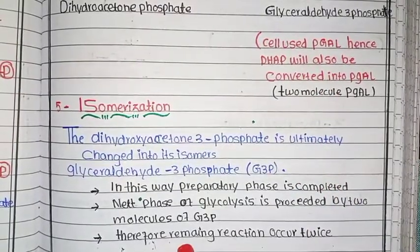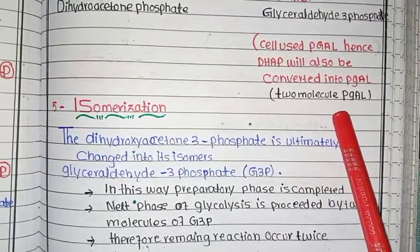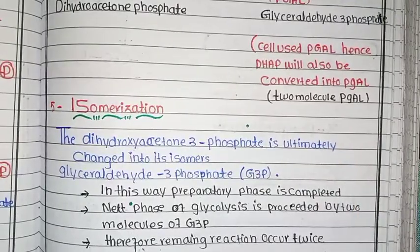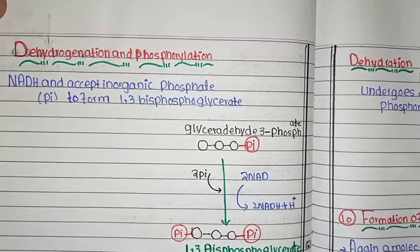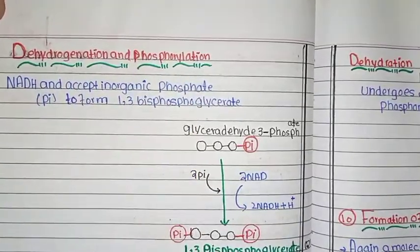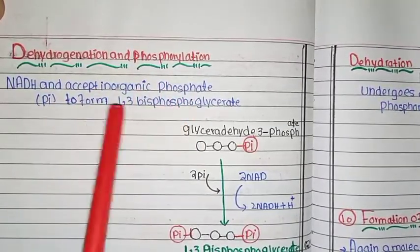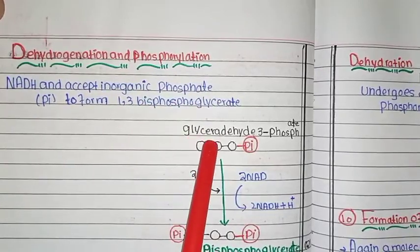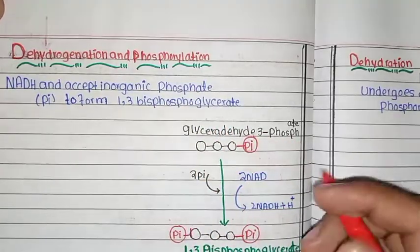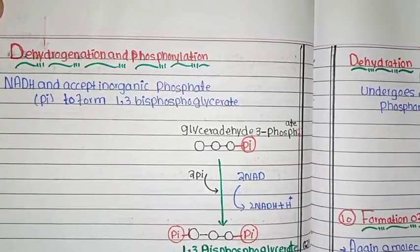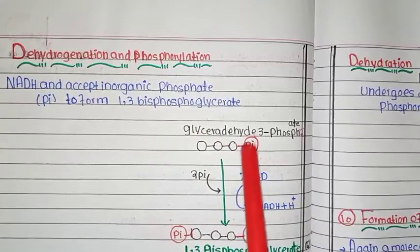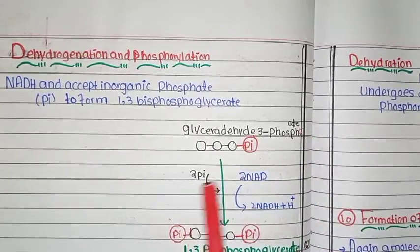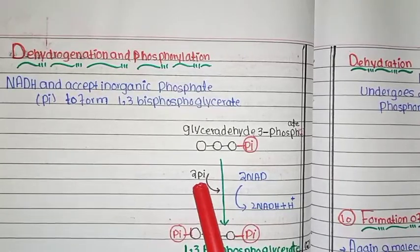In the payoff phase, step 6 involves dehydrogenation and phosphorylation. G3P accepts an inorganic phosphate to form 1,3-bisphosphoglycerate. Because there are two G3P molecules, two molecules of 1,3-bisphosphoglycerate are produced. In dehydrogenation, hydrogen is removed — this is oxidation — and NADH is also produced here.